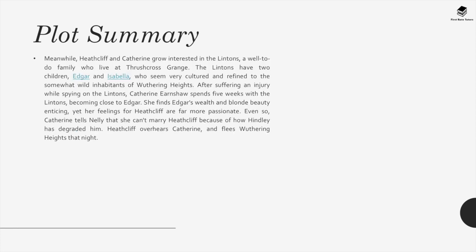Hindley descends into alcoholism and continues to abuse Heathcliff. Meanwhile, Heathcliff and Catherine grow interested in the Lintons, a well-to-do family at Thrushcross Grange. The Lintons have two children, Edgar and Isabella, who seem very cultured and refined. After suffering an injury while spying on the Lintons, Catherine spends five weeks with them, becoming close to Edgar. She finds Edgar's wealth and beauty enticing, yet her feelings for Heathcliff are far more passionate. Even so, Catherine tells Nelly she can't marry Heathcliff because of how Hindley has degraded him.